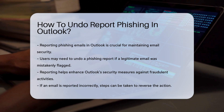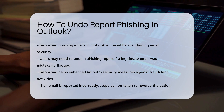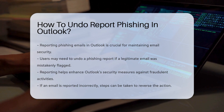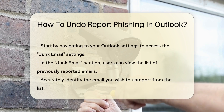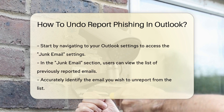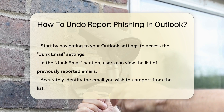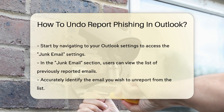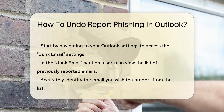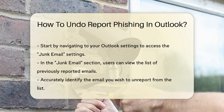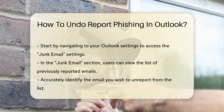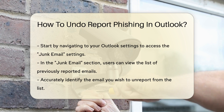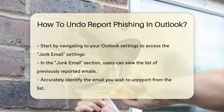When you report an email as phishing in Outlook, the system uses this information to enhance its security measures. It helps protect you and others from fraudulent activities. However, if you realize the email was genuine, you can take steps to reverse this action.